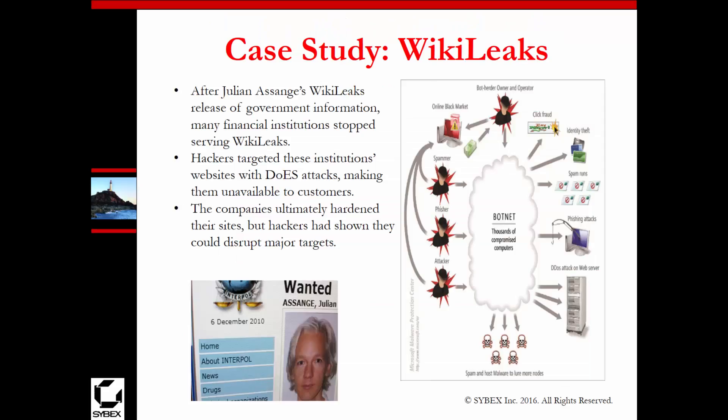A case study we could look at is WikiLeaks. After WikiLeaks released government information, many financial institutions stopped serving WikiLeaks. Hackers targeted these institutions' websites through a distributed denial of service attack, making them unavailable to customers. The companies ultimately hardened their sites, but hackers kept pushing through. WikiLeaks publishes information leaked through governments or corporations that they don't want public. Because some companies hate them, they stop serving WikiLeaks resources — and the community that doesn't like that will target those anti-WikiLeaks companies.